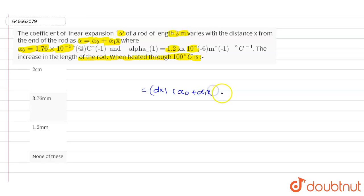...multiplied with delta T. And we will write the net expansion value will be equals to delta T in the limit of 0 to L, multiplied with alpha naught plus alpha 1 into x, multiplied with dx. So we will write the equation as delta T multiplied with alpha naught L plus alpha 1 L square divided by 2.